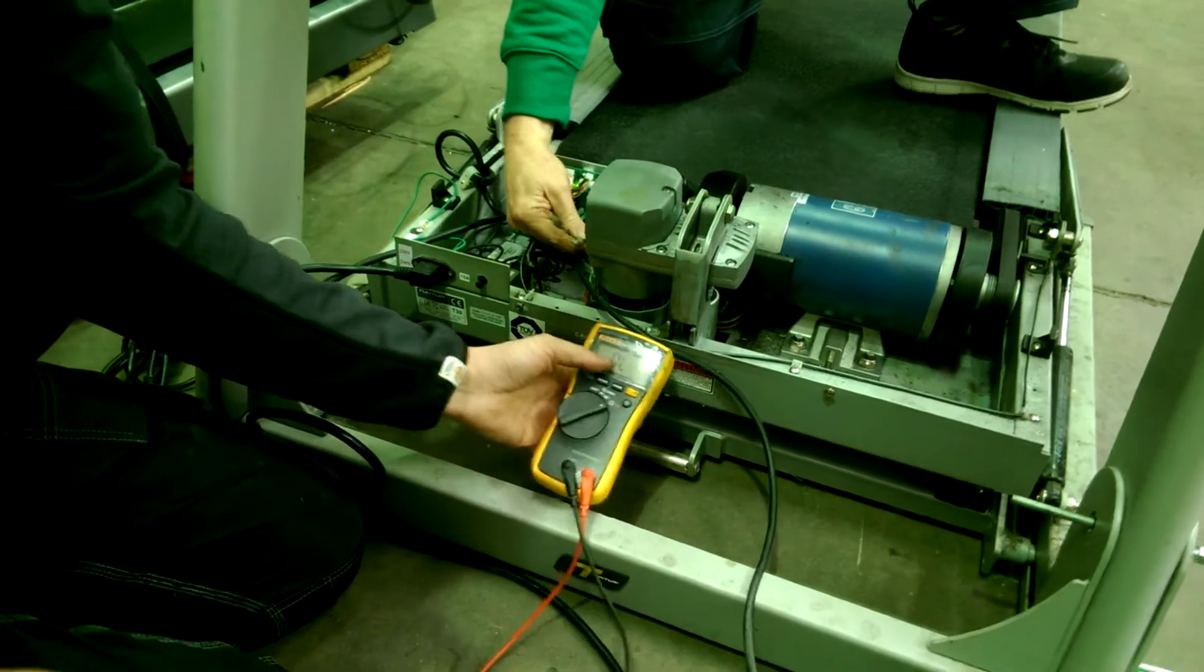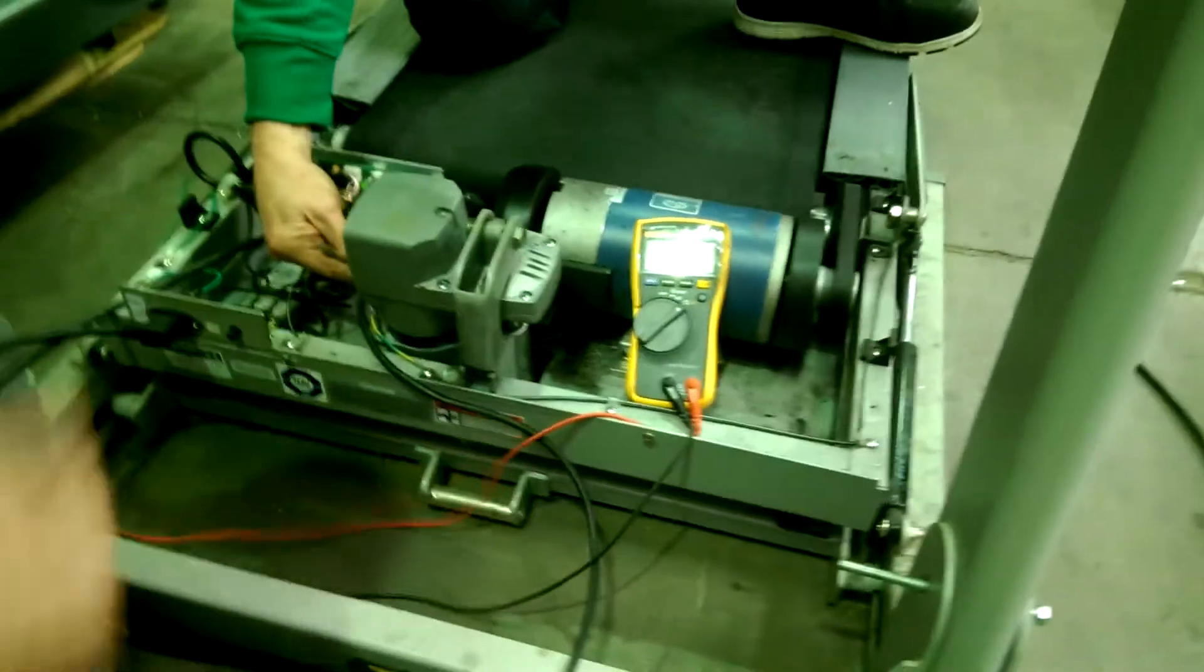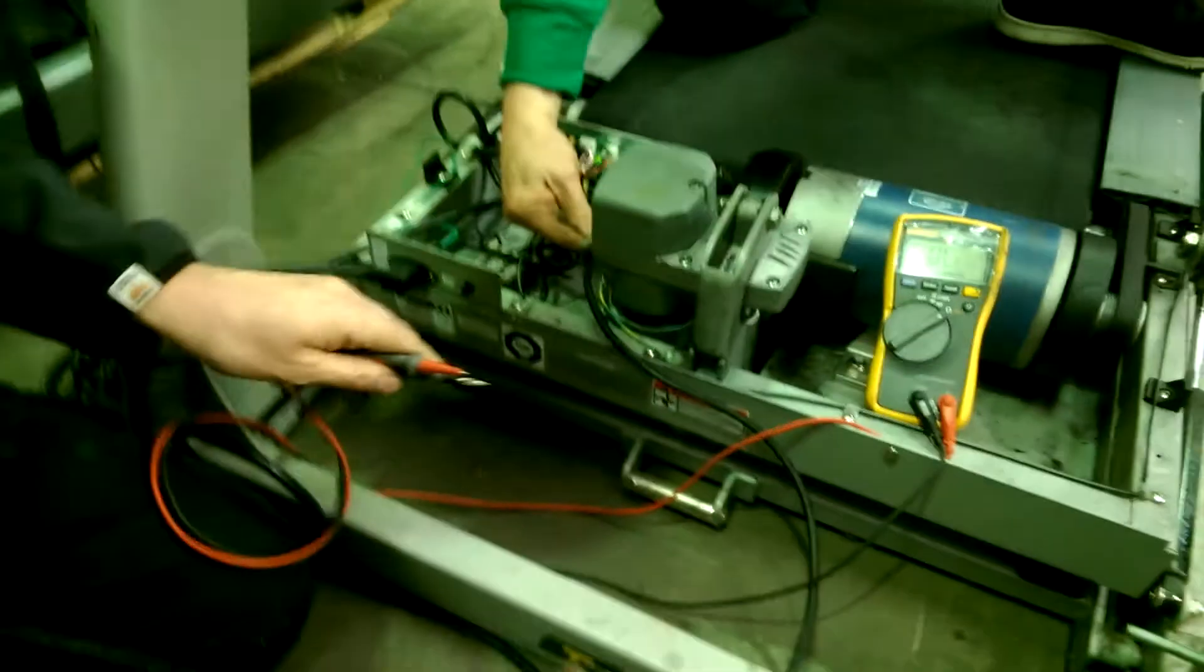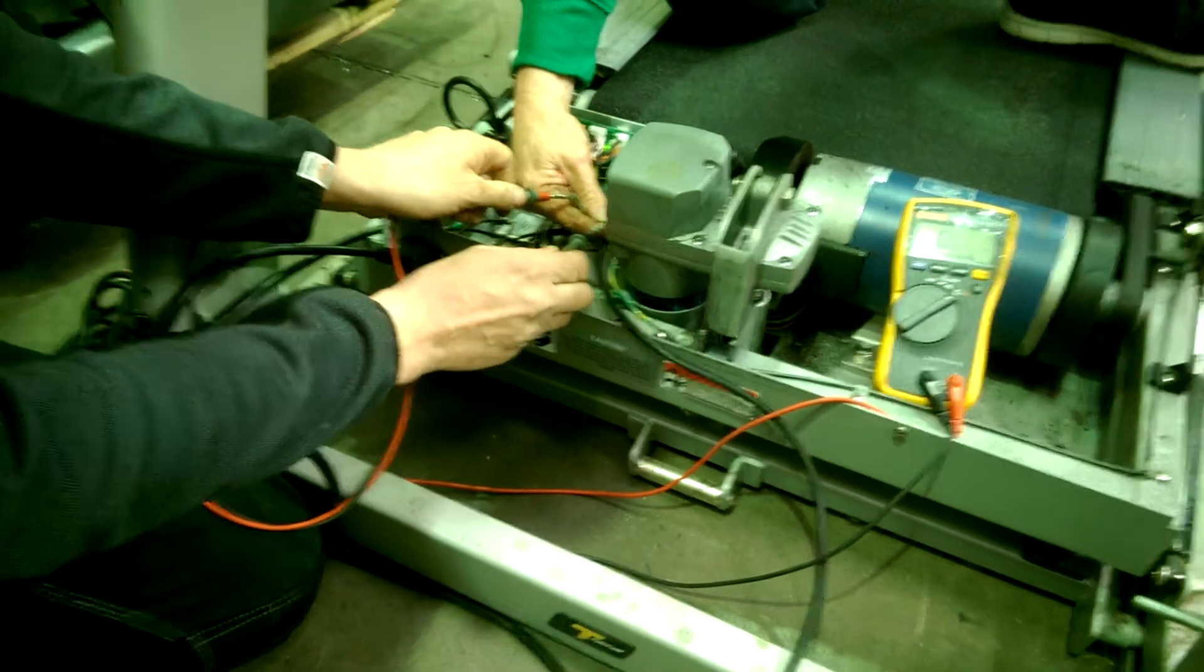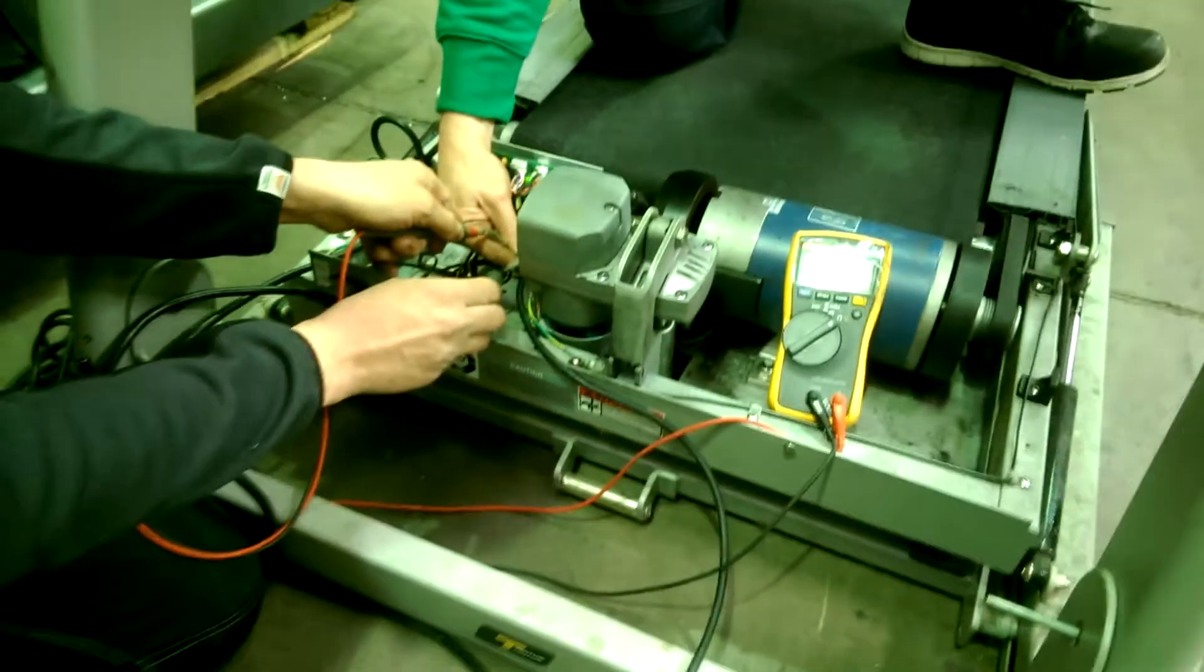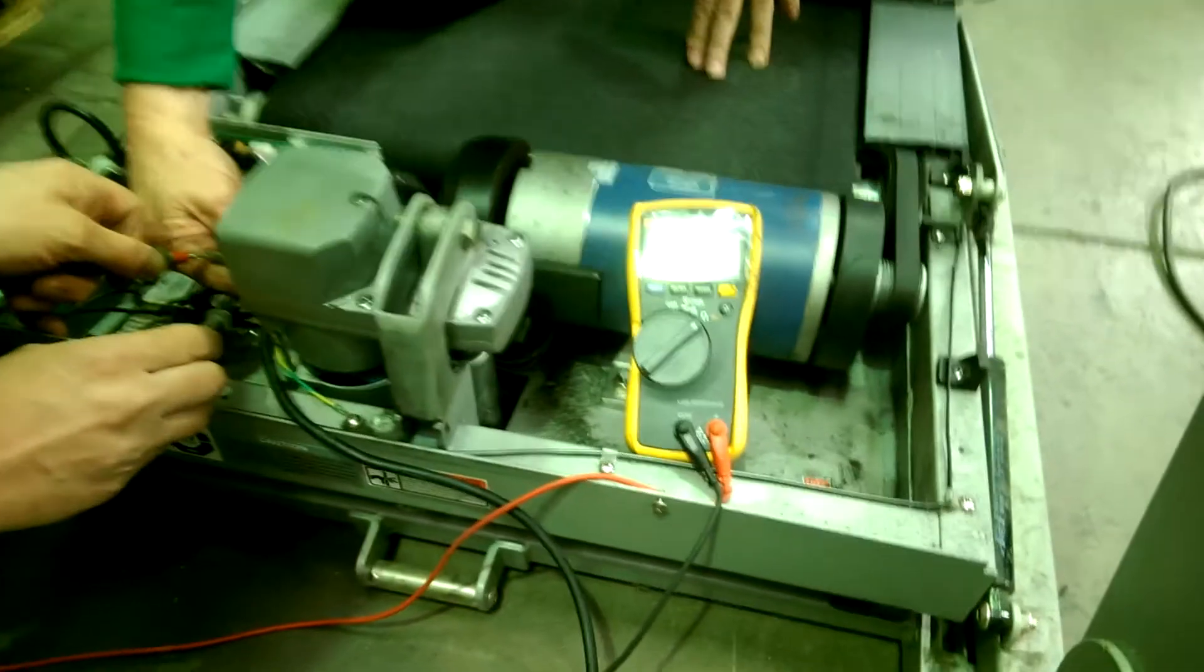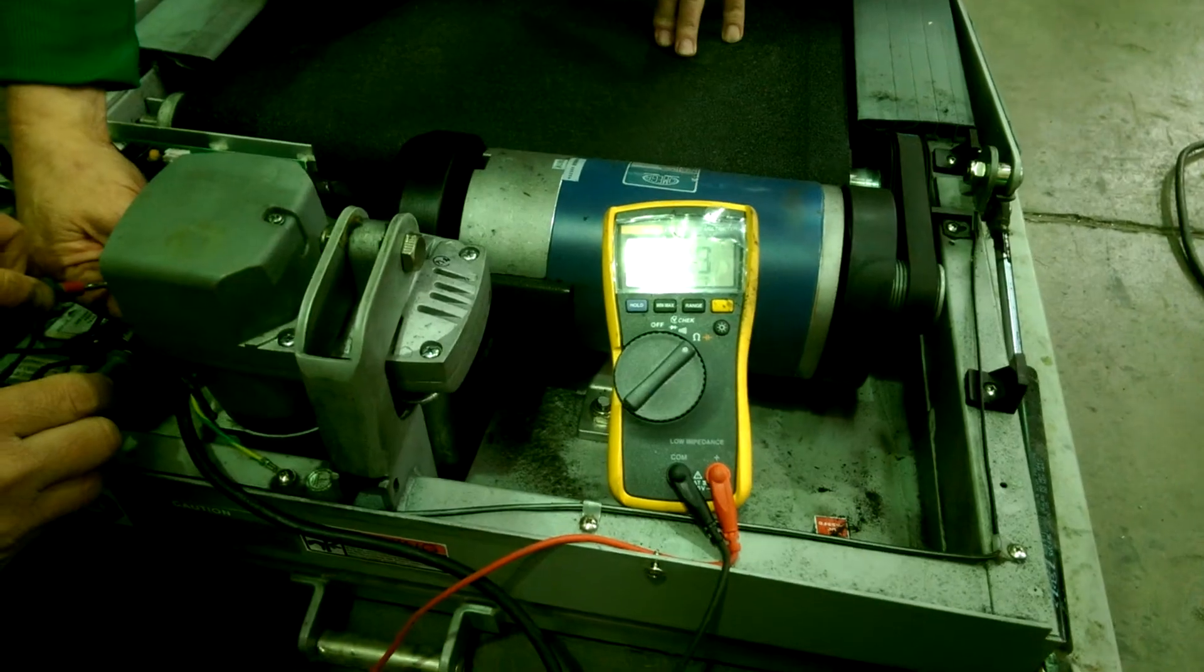We're going to measure what's going on with the motor. So these are the motor wires here and first of all, we'll measure the resistance of the windings, which is on this particular one 1.92 ohms, which is perfectly fine.